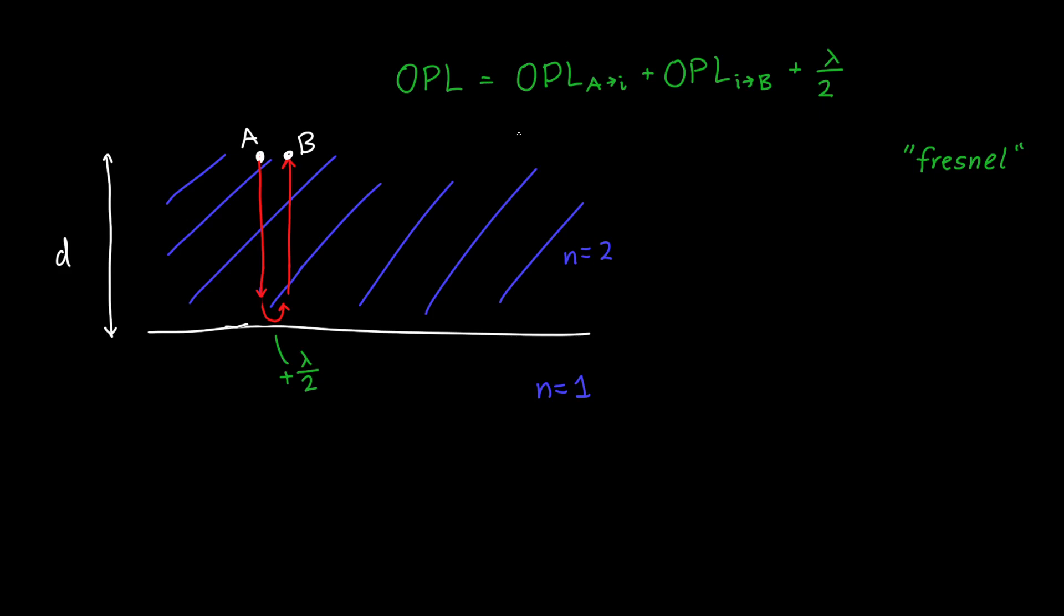Now this first optical path length from point A to the interface, well this is just the distance times the refractive index, because the refractive index is constant over that length. So it's the distance times the refractive index, which is here just 2. So 2D. And then we need to add the distance, or the optical path length, from the interface back to point B. So that itself is just D times 2. Same as before, D times 2. And then finally we add our lambda over 2.